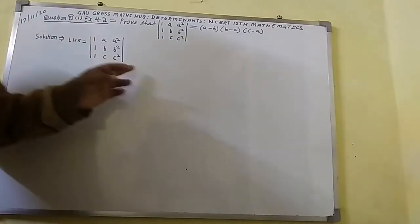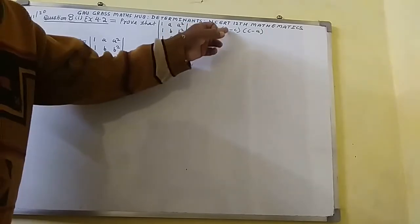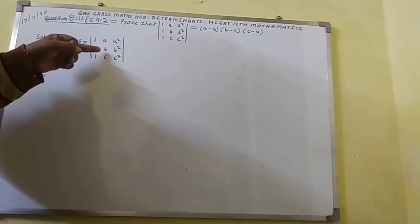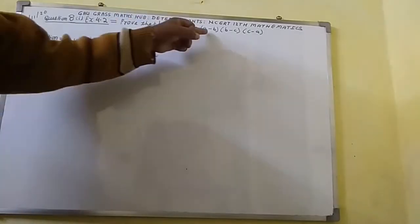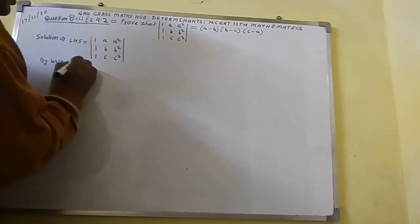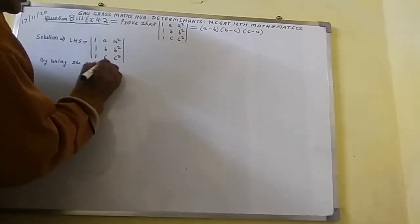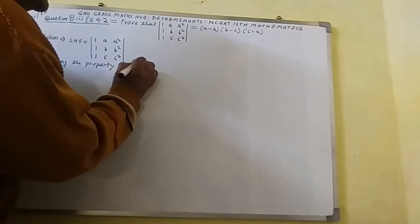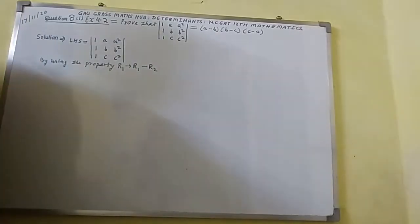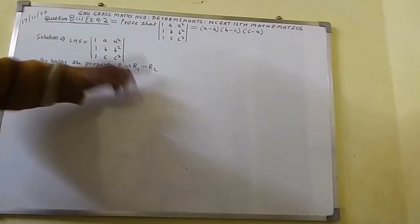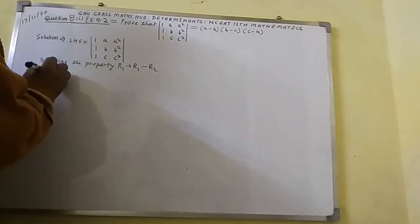Here I shall use a property. In the RHS you can see (A-B), (B-C), and (C-A). So I shall apply a row operation to get (A-B). If I do R1 minus R2, I can easily get (A-B). So by using the property, R1 goes to R1 minus R2.